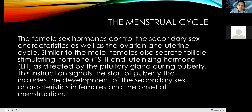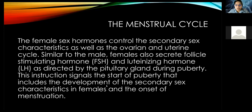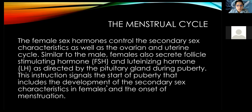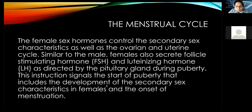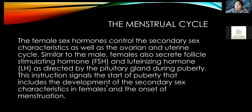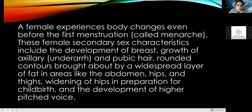The menstrual cycle: female sex hormones control the secondary sex characteristics as well as the ovarian and uterine cycle. Similar to males, females also secrete follicle-stimulating hormone — FSH — and the luteinizing hormone — LH — as directed by the pituitary gland during puberty. This signals the start of puberty, including the development of secondary sex characteristics in females and the onset of menstruation. A female experiences body changes even before the first menstruation, called menarche.